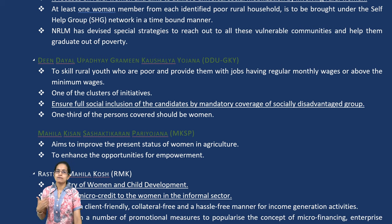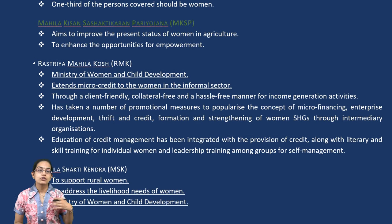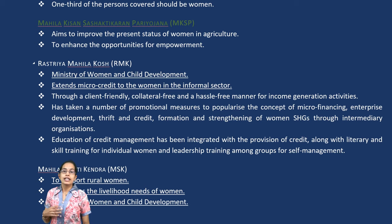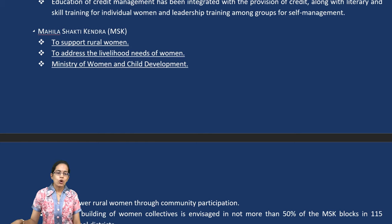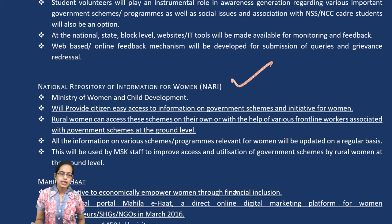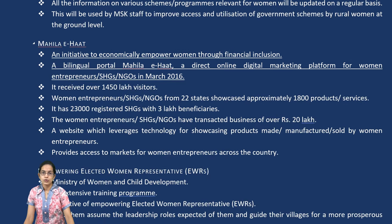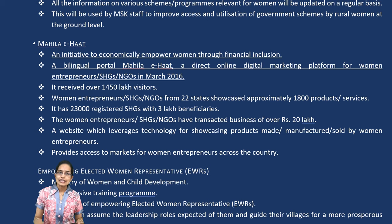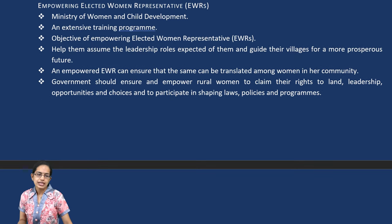Mahila Sashaktikaran focuses on empowerment. Rashtriya Mahila Kosh provides micro-credit funds to women in the informal sector under the Ministry of Women and Child Development. Mahila Shakti Kendras address the needs of women in day-to-day livelihood activities. The national repository for information on women — called NARI — provides citizens access to information on various schemes and government initiatives that rural women can access through various portals.